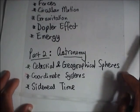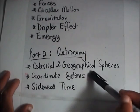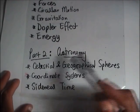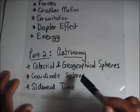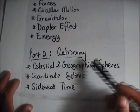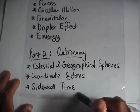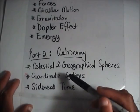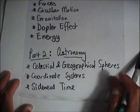The second part is the astronomy part. We'll be discussing celestial spheres, celestial and geographical spheres, coordinate systems, sidereal time. Some of the concepts I didn't write them here but they fall under these main divisions under astronomy.